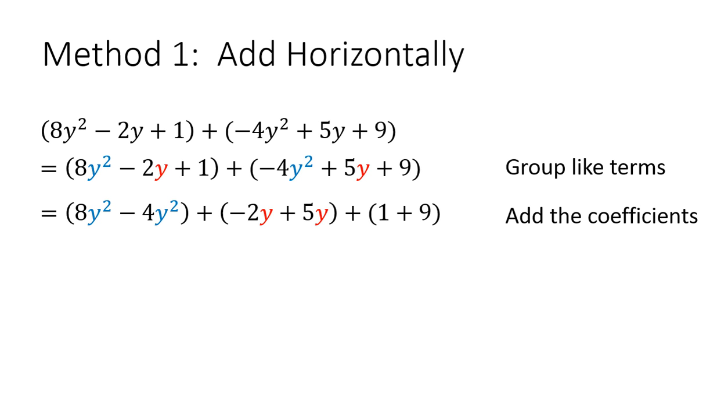Now that they're grouped by like terms, you just want to add the coefficients. So you add 8 minus 4, that's 4y². Then add -2 plus 5, that's 3y. And then 1 plus 9 equals 10. So that is our final answer: 4y² + 3y + 10.